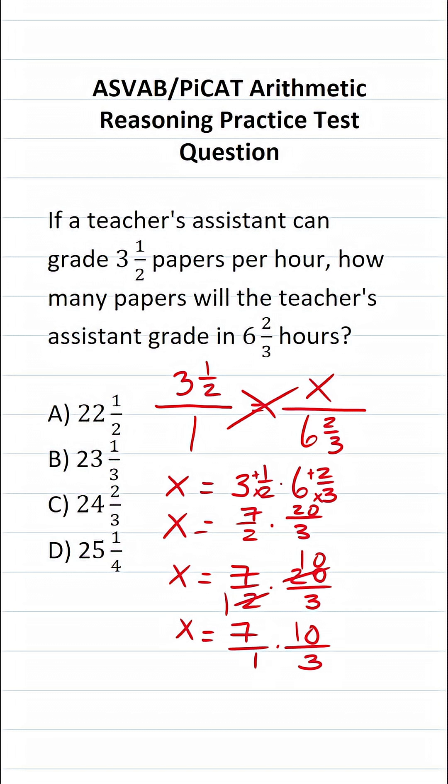And when you multiply two fractions, you just multiply straight across. So this becomes seven times 10, which is 70, over one times three, which is three.